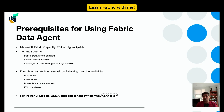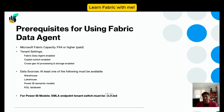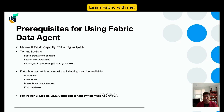Prerequisites for using Data Agents: you need to be on Fabric F64 capacity or higher. Power BI Pro will not work, premium-per-user is not going to work — nothing below Fabric F64 works for Data Agents. You also need an XML endpoint turned on in the Fabric tenant, the Fabric Data Agent Copilot switch enabled, and cross-geo AI processing enabled. You also need data — either in a lake house, warehouse, semantic model, or KQL database.